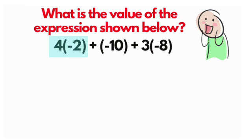So let's look at our first value. We have some parentheses and multiplication. So we have four times negative two. Four times negative two is negative eight.